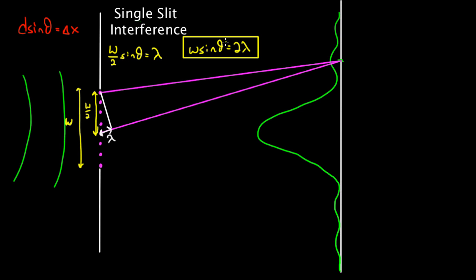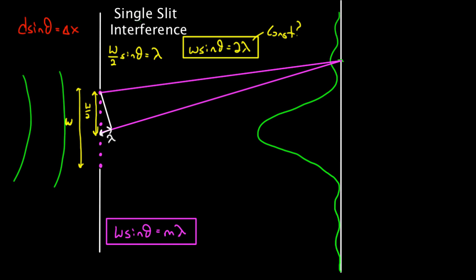Now I'm already confused. W·sinθ = 2λ constructive? We already proved this is a destructive point. Remember, our relationship for the destructive points that we derived was w·sinθ = mλ, as long as m is not zero — m equals one, two, three, four, five — these are giving destructive for any integer m. It looks like we've just proved these are constructive. How are these constructive? Well, they're not really. They kind of are, but watch what happens.